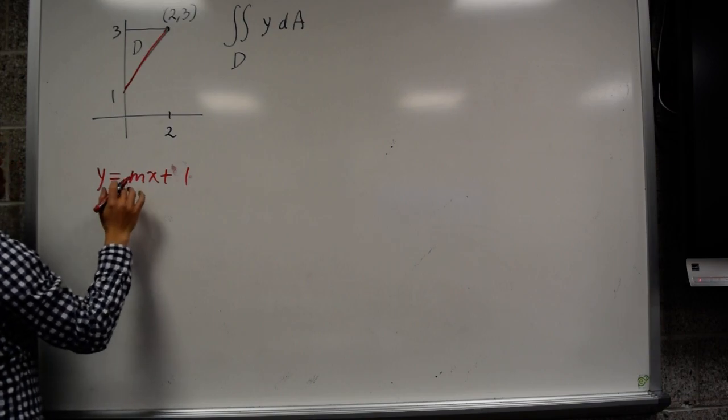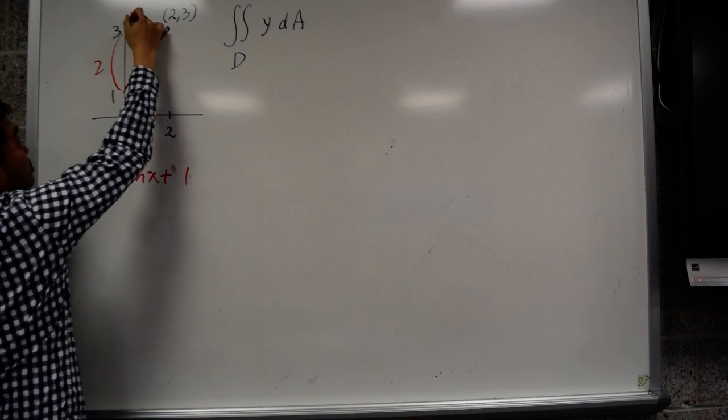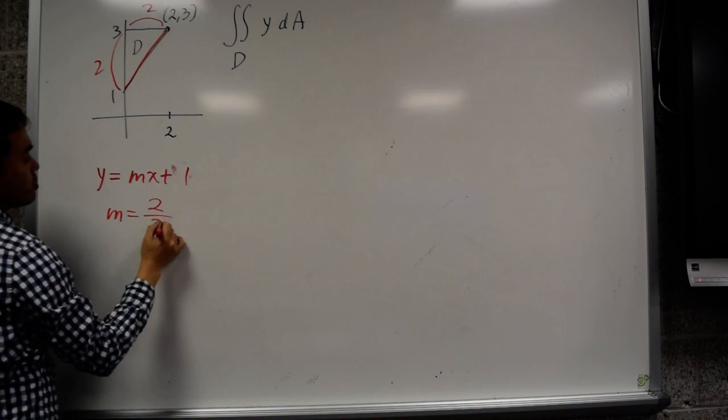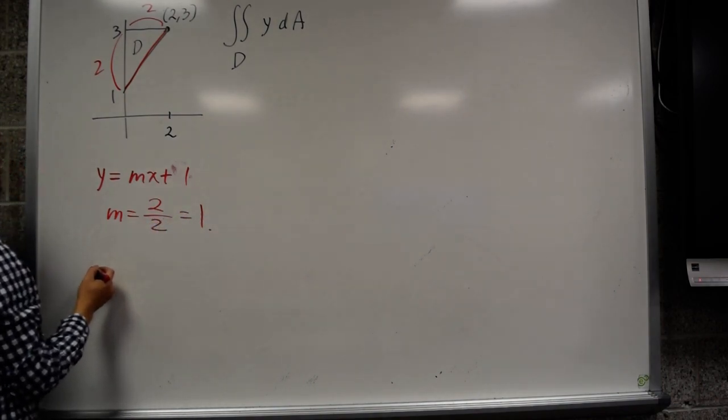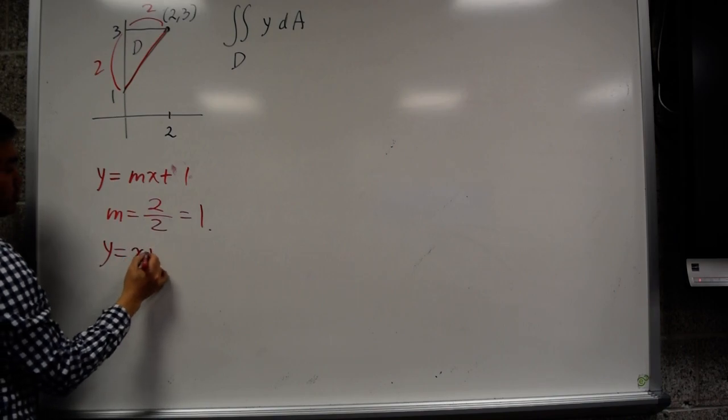To get the slope, it's rise over run, so rise is 2 and run is also 2. So you get m equals 2 over 2, which is 1, which means that the equation for this side is y equals x plus 1.